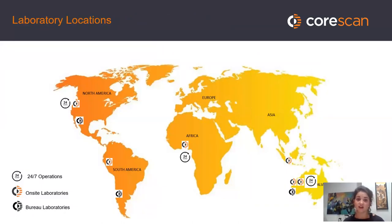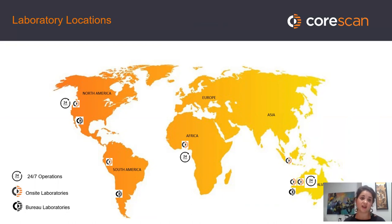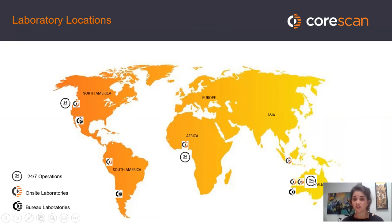In terms of where we're located, currently we have operations spanning the globe. We have bureaus set up where you can ship your core for a quick look or a trial. We have been set up in Santiago de Chile, Hermosillo Mexico, as well as Perth, Australia. Other CoreScan points indicate areas where we have on-site laboratories working with specific companies, and where you can see the 24-hour signal, that lab is operating 24 hours a day.